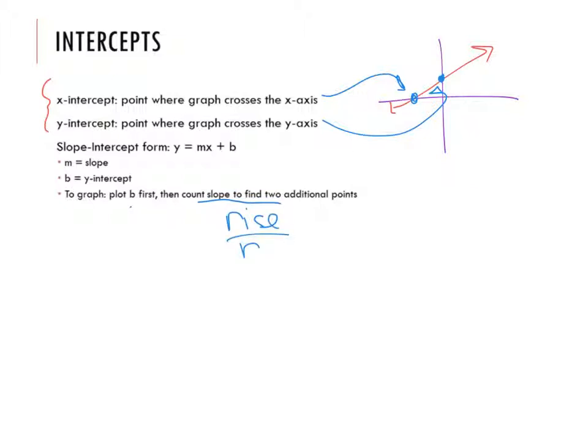Right, because that's what our slope is, to find two more points. So if something is already in slope-intercept form, this is a very quick method of graphing. So let's take a look.